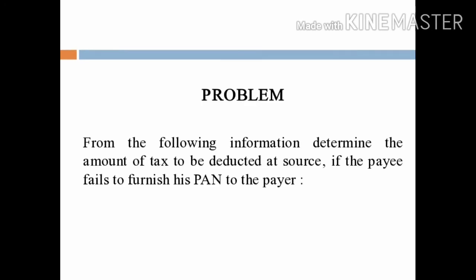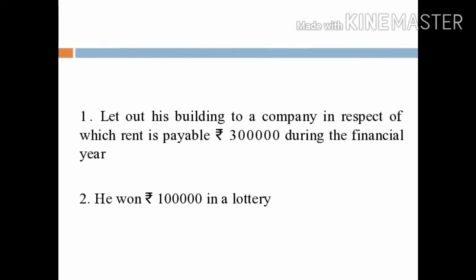We are going to discuss the following question: from the given information, determine the amount of tax to be deducted at source if the payee fails to furnish his PAN to the payer. The income includes: letting out a building to a company in respect of which rent payable is rupees 3 lakh during the financial year, and winning rupees 1 lakh in a lottery.